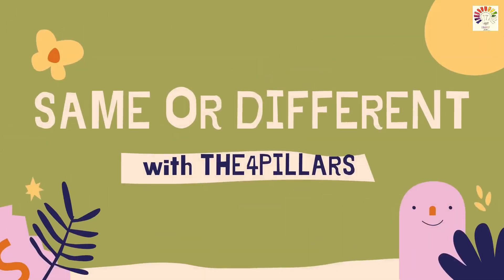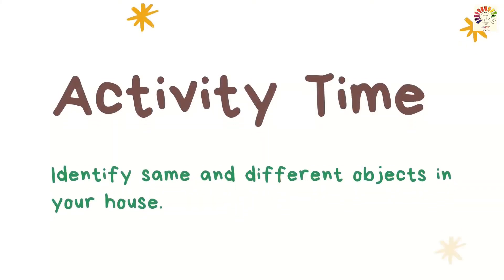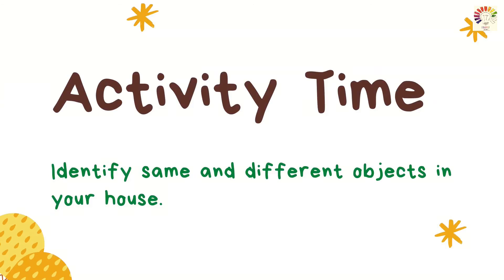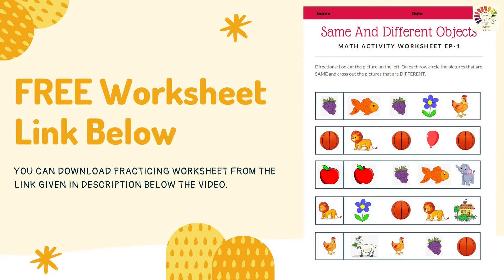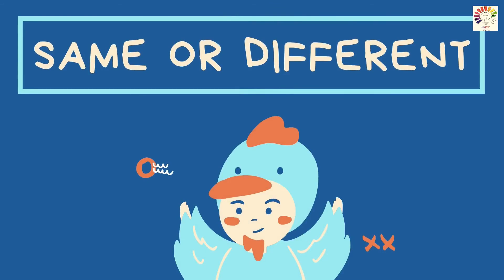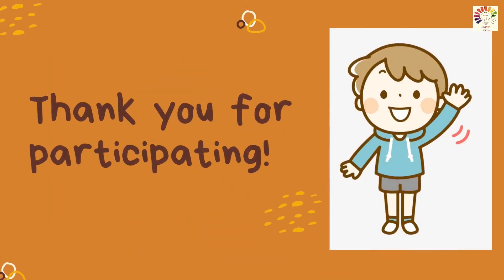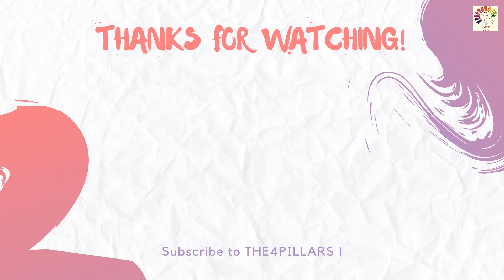Okay children, I hope all of you understood what is same and different — what is the concept of it. You have a small activity: you need to identify the same and different objects around your house. We'll learn it more and more. I have also attached a worksheet for you in the description box below. There is a link for it — you can go through that link and download it, and also you can view it online. In that worksheet you can just practice same and different, identify the objects and find same and different from it. I hope you enjoyed today's class — that is a pre-number concept. What we have learned today: we have learned same and different objects. See you in another class. Until then, take care. Be happy. Bye-bye and thank you.